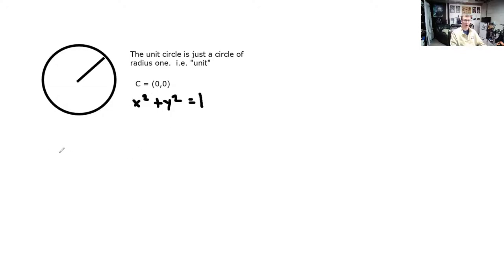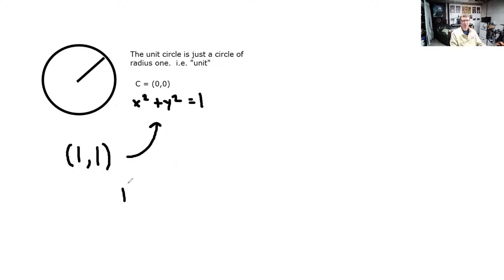If I gave you a random point like (1, 1), it's easy to verify or refute that this is on the unit circle. All you have to do is make sure it satisfies this equation. Does this point satisfy the equation? The answer is no. If we take 1 squared and add it to 1 squared, we get 2, and that's not 1. So the point (1, 1) is not on the unit circle — it's right up here to the upper right of the origin.